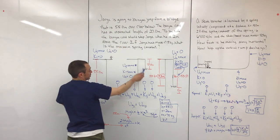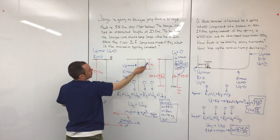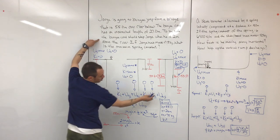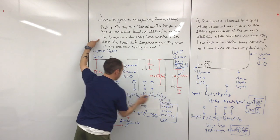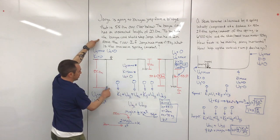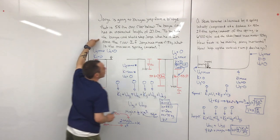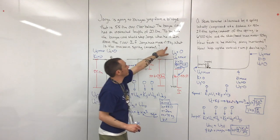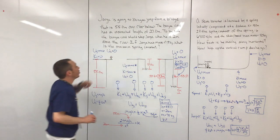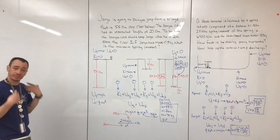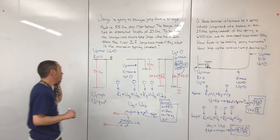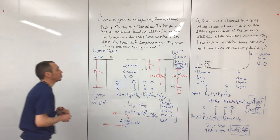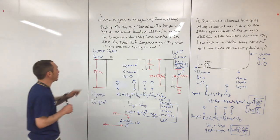The bungee cord has an unstretched length of 27 meters. To be safe, the bungee cord should stop George when he's two meters above the river. If George has a mass of 75 kilograms, what is the minimum spring constant? So you want to draw several pictures so that you understand what's going on.